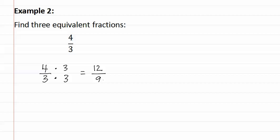Let's try one with a negative. If we have four-thirds and we multiply it by negative two on both the top and the bottom, or numerator and denominator, we get negative eight over negative six. This is also an equivalent fraction to four-thirds.